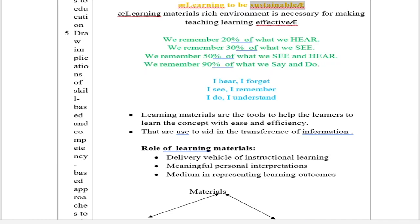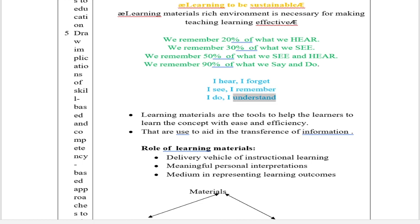Section 2.2.3 Learning Materials — Aids/Tools/Kits: E-learning materials require a rich environment for effective teaching and learning. We remember 20% of what we hear, 30% of what we see, 50% of what we see and hear, and 90% of what we say and do. 'I hear, I forget; I see, I remember; I do, I understand.' Learning materials are tools that help learners grasp concepts with ease and efficiency, used to aid in the transference of information. Role of learning materials: delivery vehicle of instructional learning, meaningful personal interpretations, and medium in representing learning outcomes.